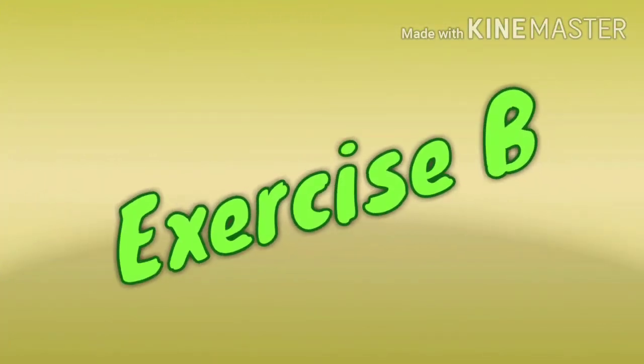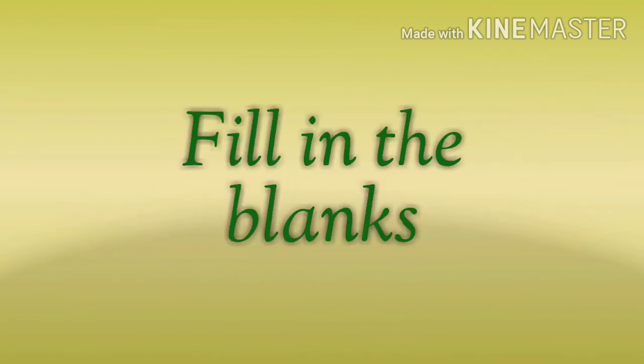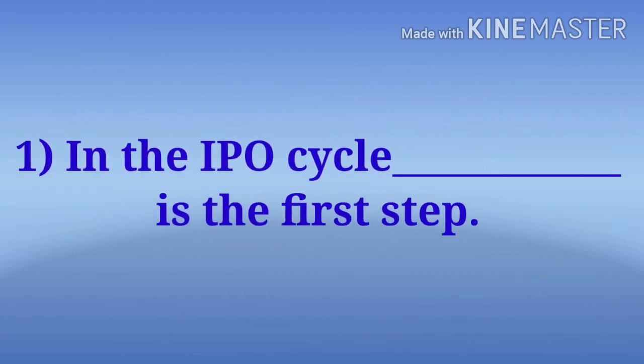Now let us start Exercise B, fill in the blanks. Number 1: In the IPO cycle, blank is the first step. Answer is input.